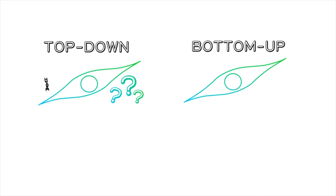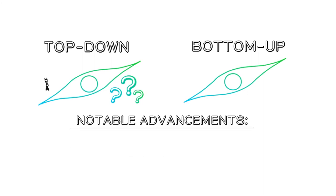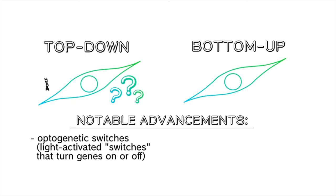Oftentimes, these components resemble existing biological systems. Particularly important developments in synthetic biology like the implementation of optimum genetic switches that are controlled by light and the development of genetic logic switches have relied on top-down approaches, whereas developments like the creation of artificial cells are products of bottom-up approaches. In both cases, scientists are able to reduce the number of unknown variables in the systems they build.